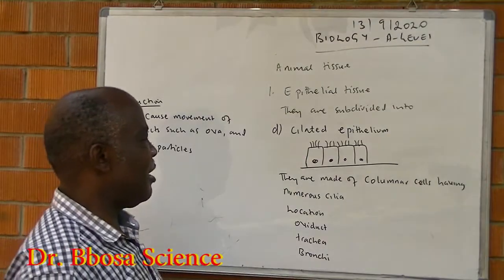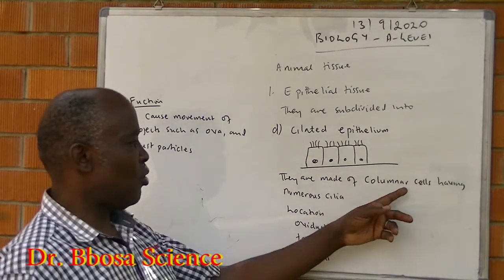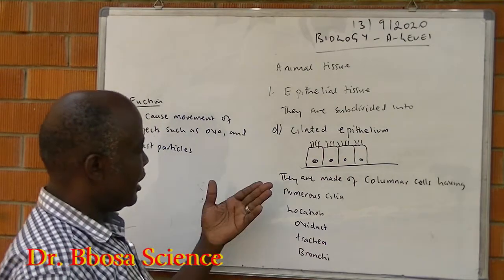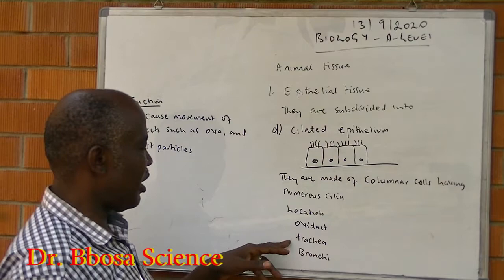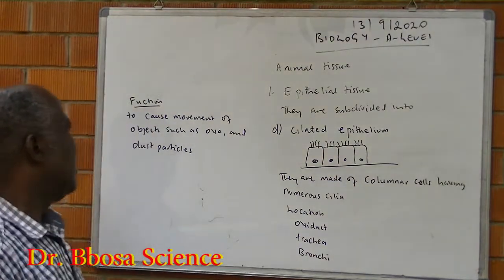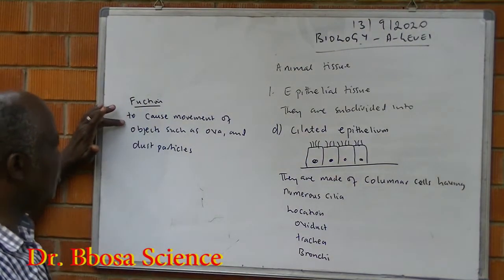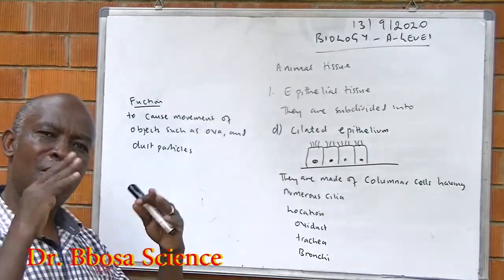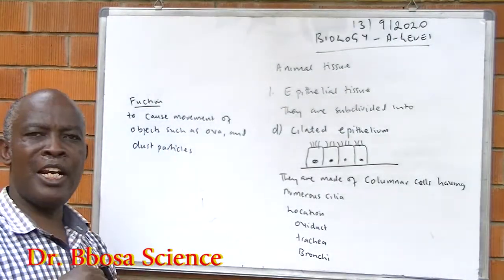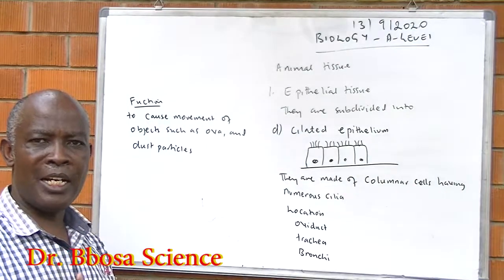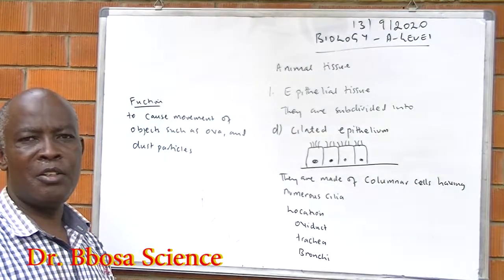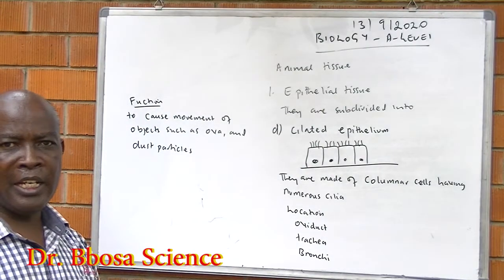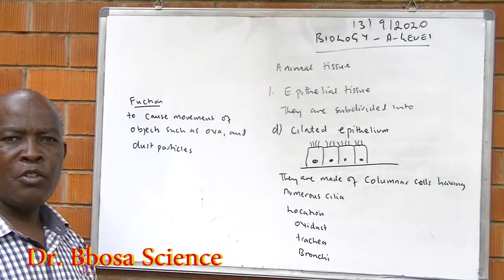Absorptive columnar epithelium has microvilli to increase surface area for absorption. Ciliated epithelium is made up of columnar cells having numerous cilia. These are located in the oviduct, trachea, and bronchi. Their function is to cause the movement of objects. In the trachea, they keep moving dust from the lungs to the throat. In the oviduct, they move the egg from the ovary to the uterus.